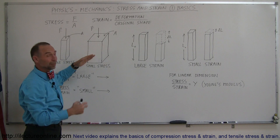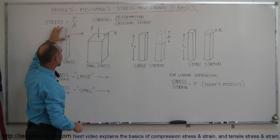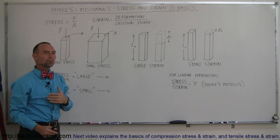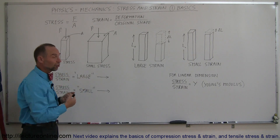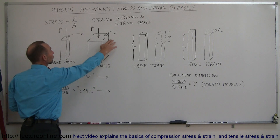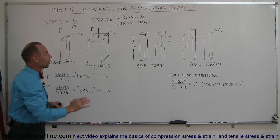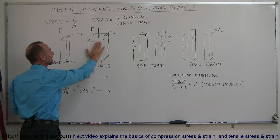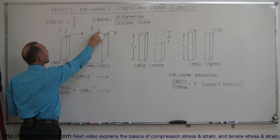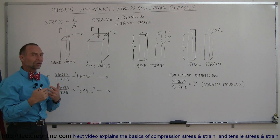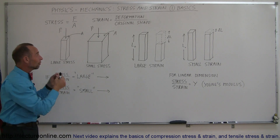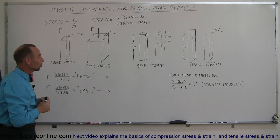Now, if we have a larger cross-sectional area — like a much bigger beam — and we apply the same force, but the area is different, then the material will experience a different amount of stress. A larger area makes this a smaller quantity, which means there is less stress. So this beam is experiencing less stress than this beam, even though the amount of force applied is exactly the same. Stress is a function of both the force applied and the cross-sectional area of the material.